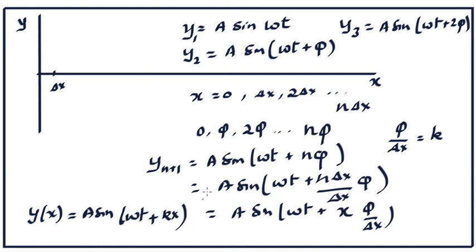In other words, we end up with a wave moving to the left — this is the mathematical proof that if you keep adding particles, each oscillating with the same frequency and same amplitude but with a constant phase difference with the previous one, you end up with a wave moving to the left or to the right depending on the phase difference. If each successive particle had been lagging in phase instead of leading in phase, you would have ended up with a wave moving to the right.